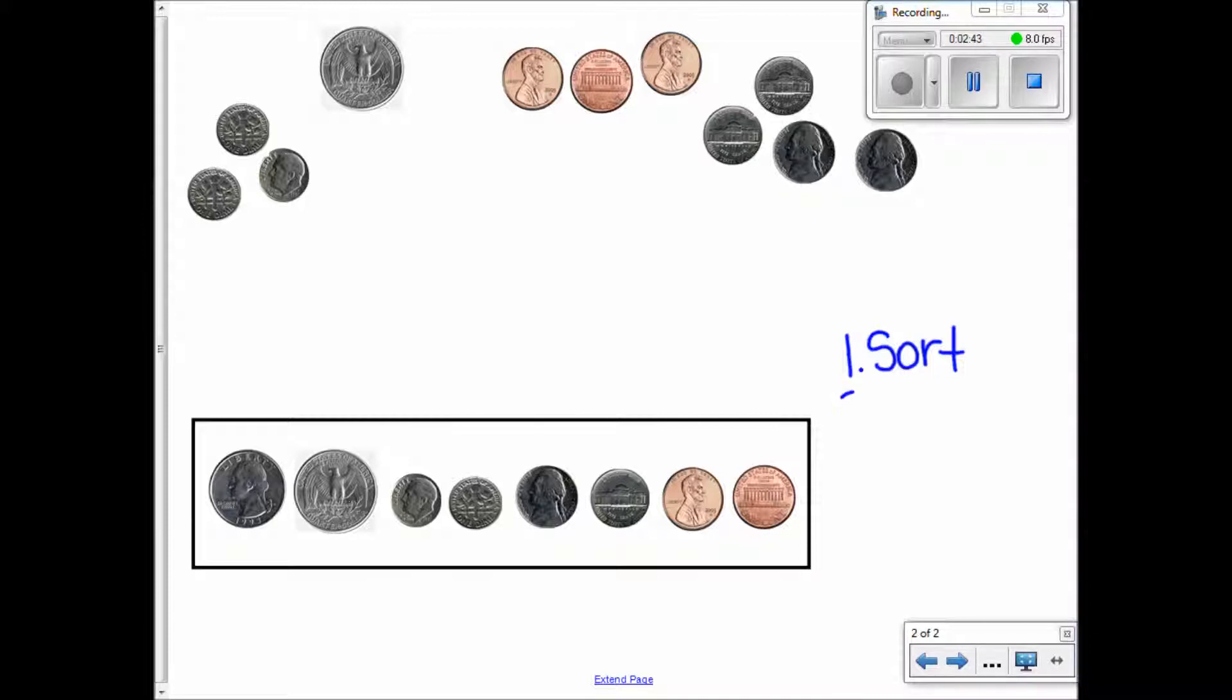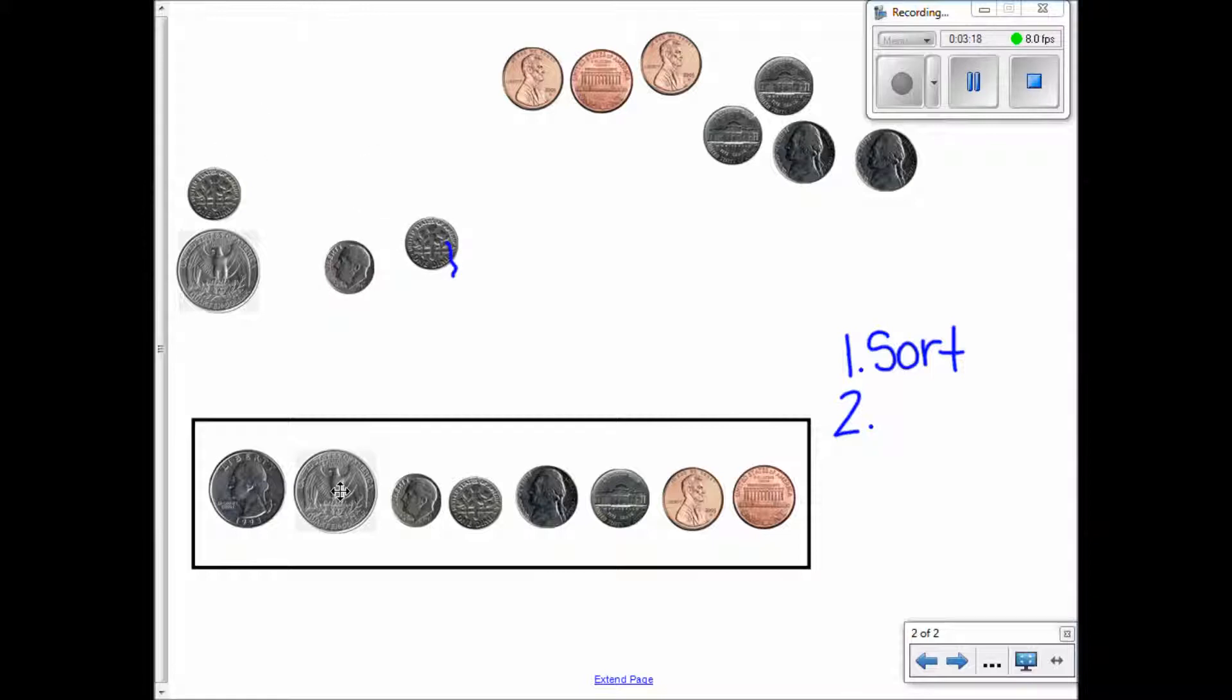Then the second thing you're going to do is put them in order from greatest to least - the coin with the greatest value to the coin with the least value. Which one of these coins has the greatest value? The quarter. So I'm going to begin with the quarter and put it way over here. Do I have any more quarters? No. So now my coin with the next greatest value is a dime. How many dimes do I have? Three. I have three, so I'm going to put these three dimes together. And the coin with the next greatest value is the nickel.